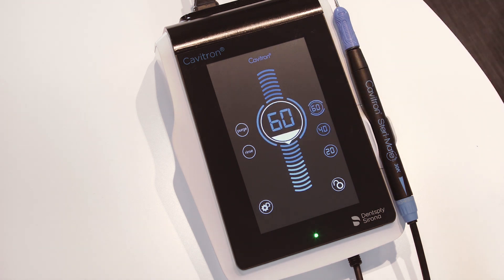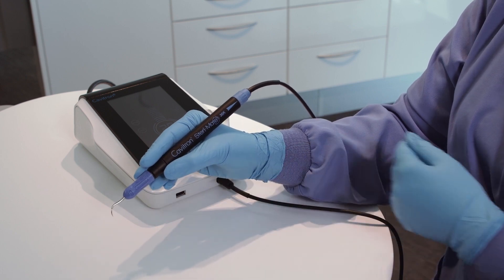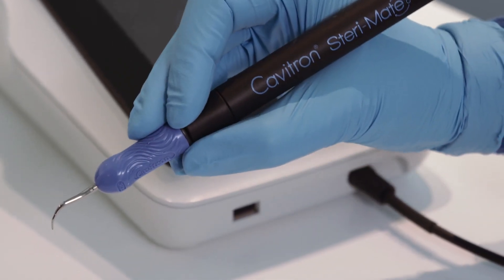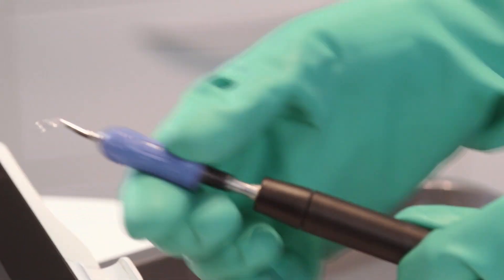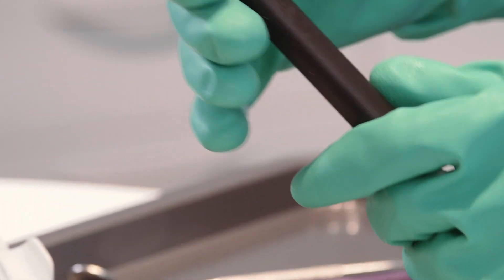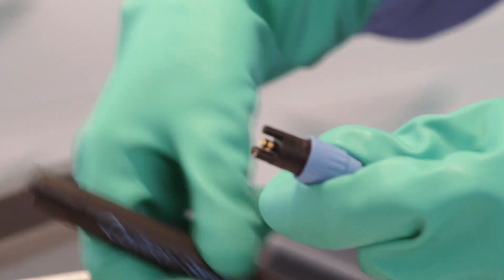It includes customizable memory power level presets for improved efficiency. The Steramate 360 rotating handpiece allows for effortless rotation of the ultrasonic insert during a scaling procedure. This handpiece is detachable and autoclavable, reducing cross-contamination for enhanced infection control.